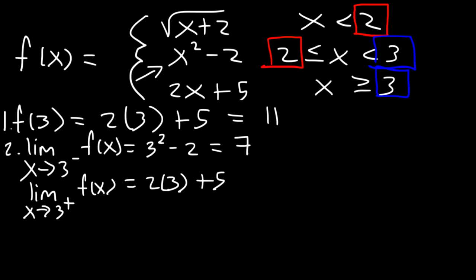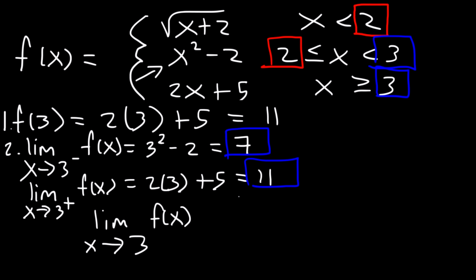The left-side limit is 7 and the right-side limit is 11 — they don't match. So the limit as x approaches 3 of f of x does not exist. If the limit does not exist, the function is not continuous at x equals 3 — it is discontinuous at x equals 3. Because these two points do not match and we don't have a rational function, this type of discontinuity is known as a jump discontinuity.